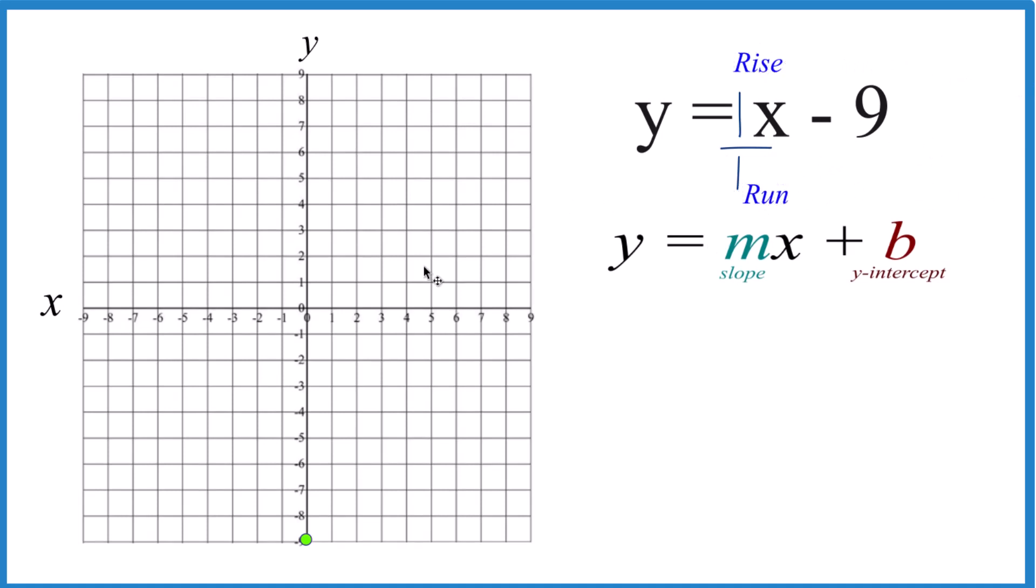And we can go to our y-intercept here, go rise 1, run 1. We can do it again. Rise 1, run 1, and you see that line there for y equals x minus 9 as we put our points here, up 1 over 1.